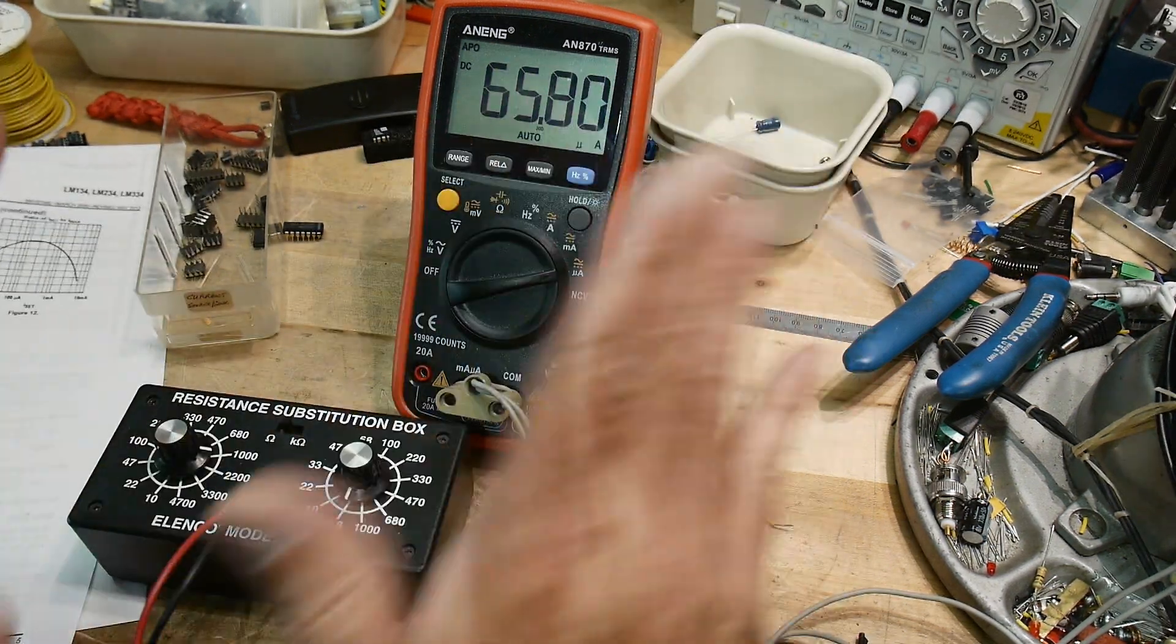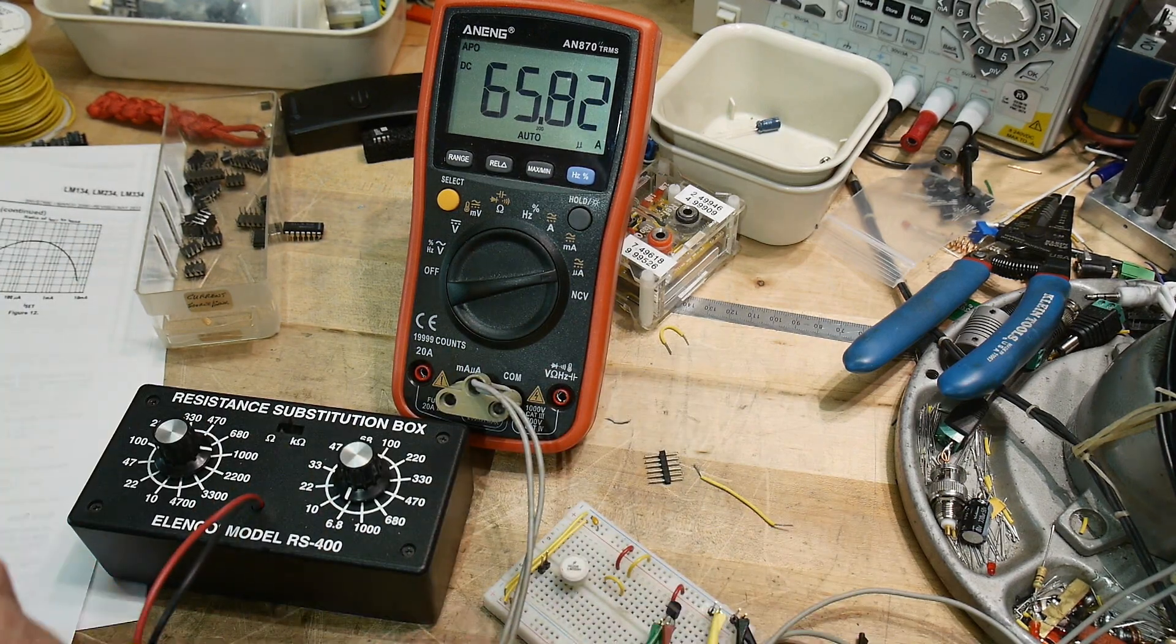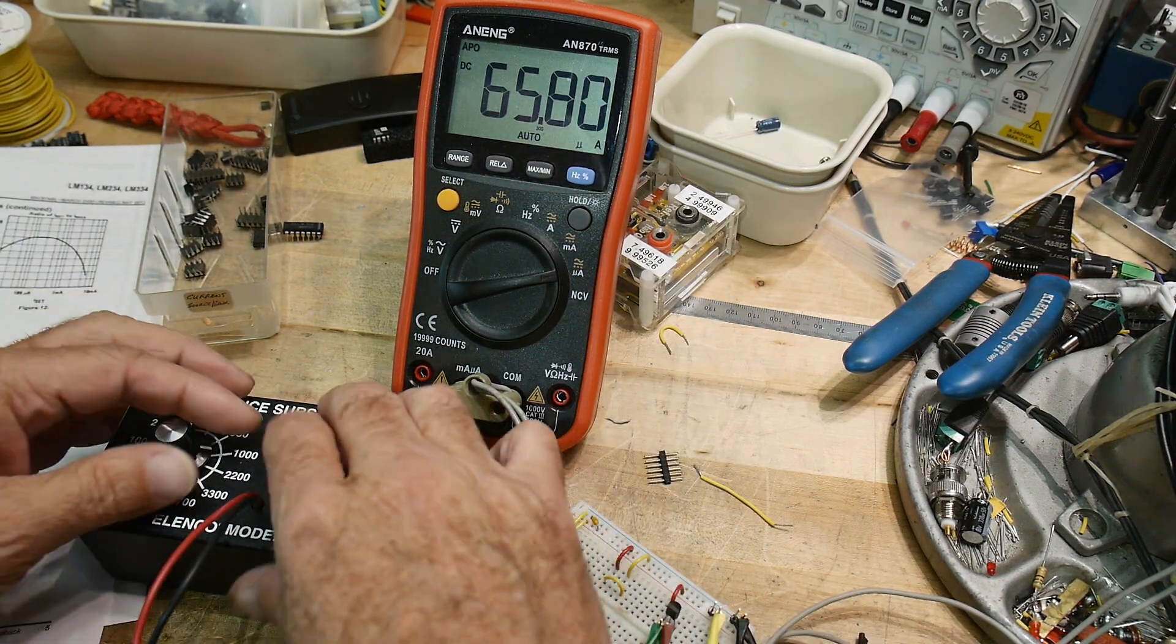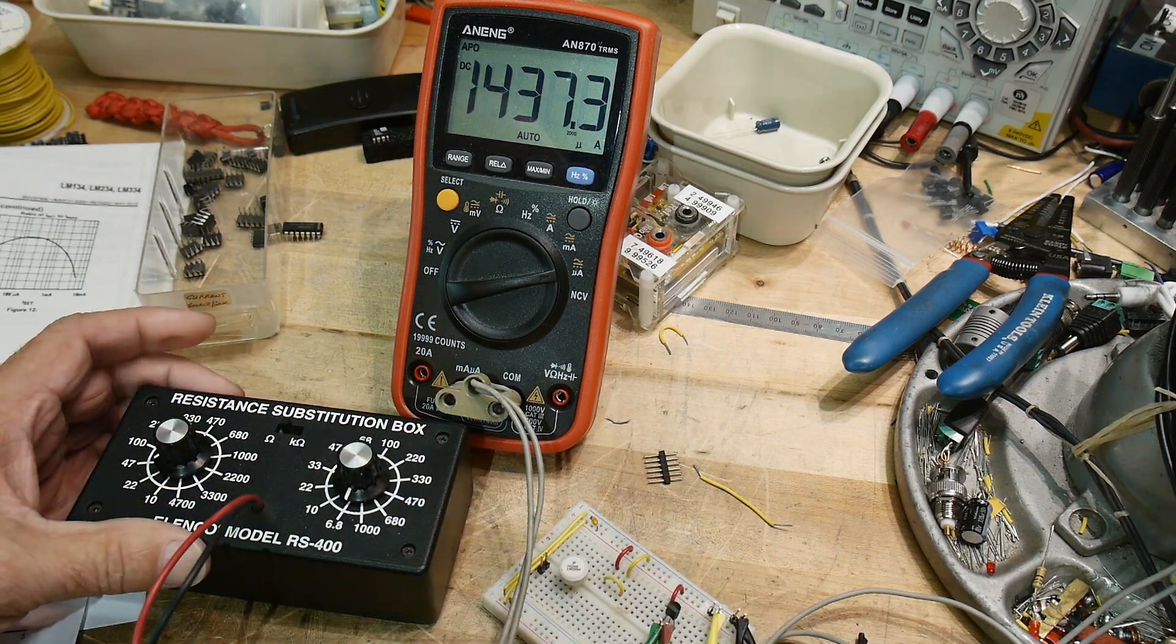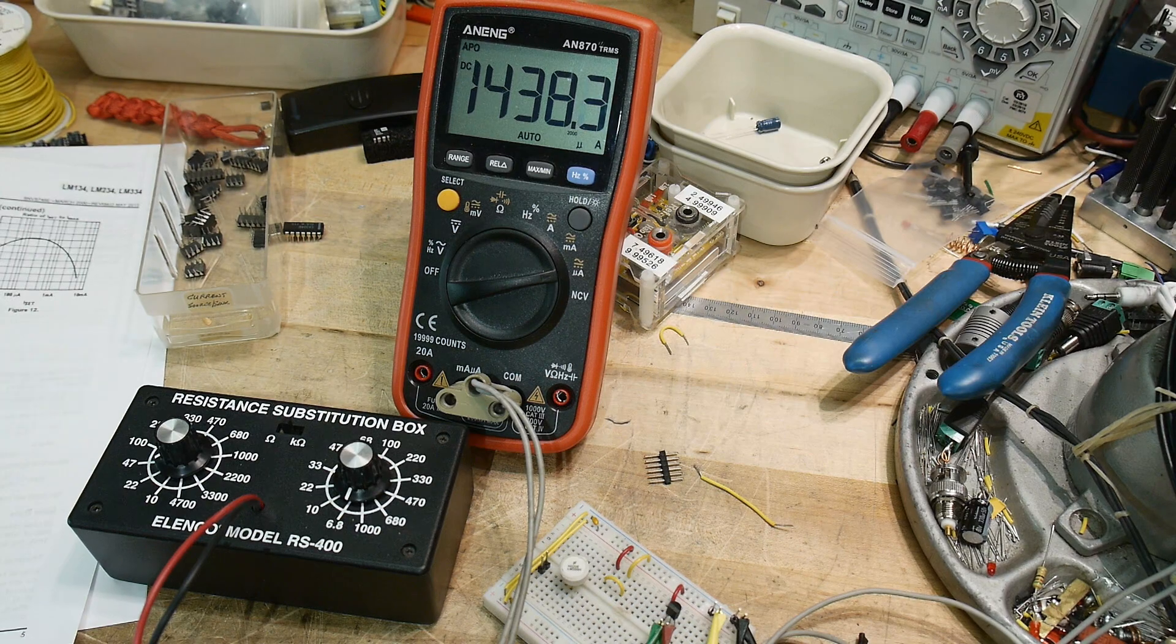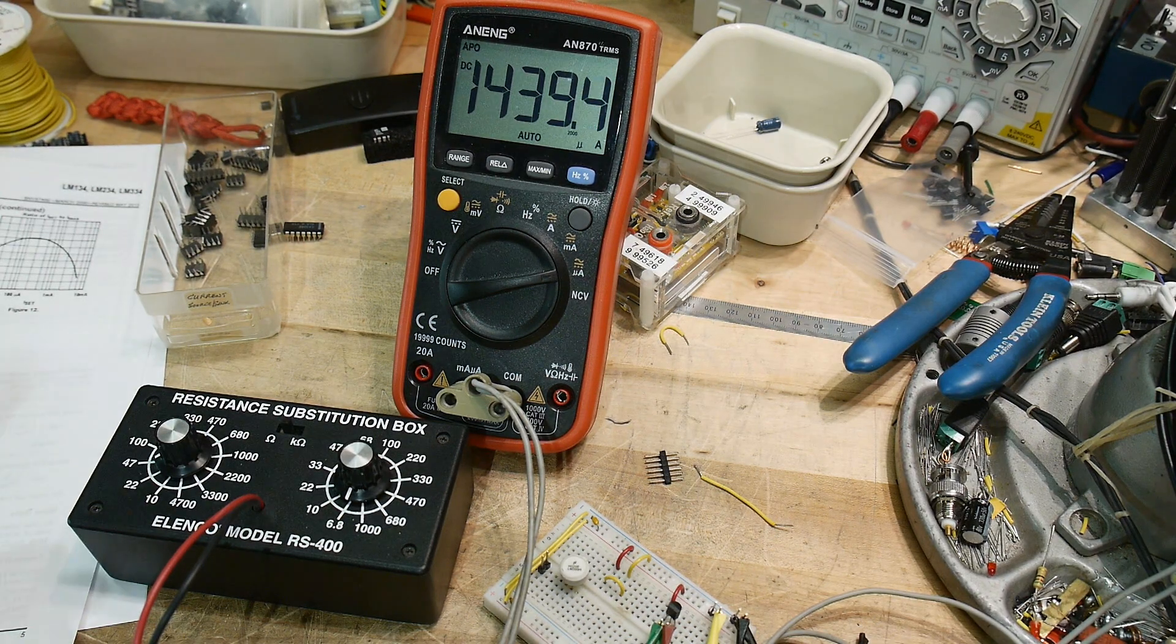So, you know, there's a little bit, the math, there's a little bit of extra care that you need to take into programming these things. And my resistance box isn't very accurate either. Here's 47 ohms. We're getting up to 1.4 milliamps. So, it's very easy to use.